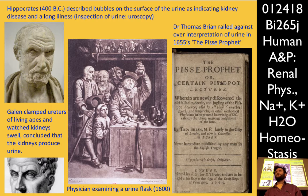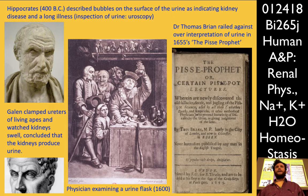Urine was instrumental in the discovery of phosphorus. One of these uroscopists was a guy named Hennig Brandt, who was Dutch. He was a uroscopist but also an alchemist searching for the philosopher's stone — which grants immortality and turns things to gold.